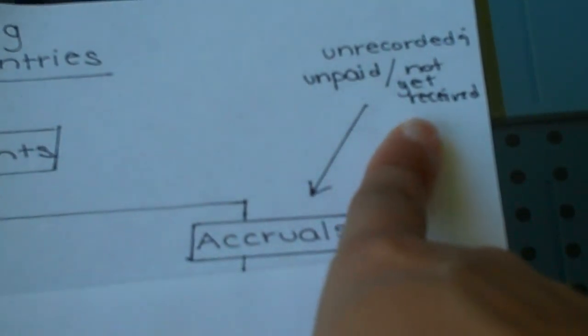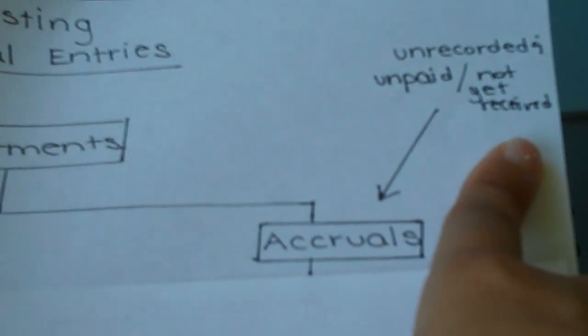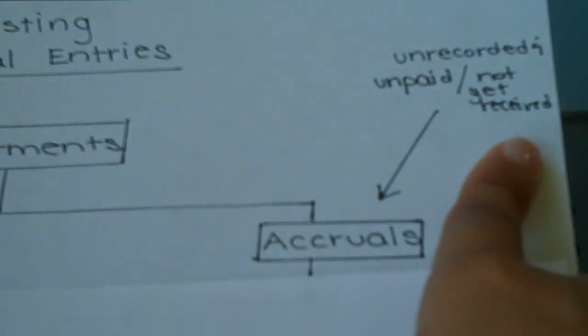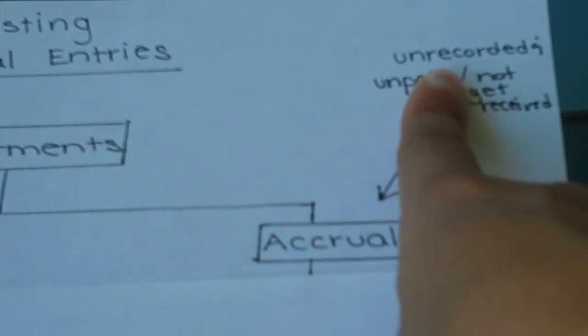An example of an unrecorded and unpaid item would be if we've received a bill from a vendor. We haven't paid it yet, it's just sitting on our desk and we haven't recorded it. It's not in our company's general journal. That would be an example of an accrued expense.